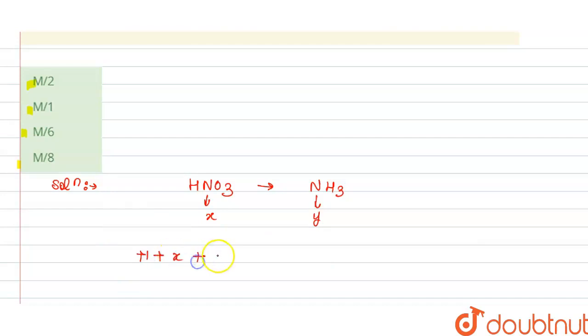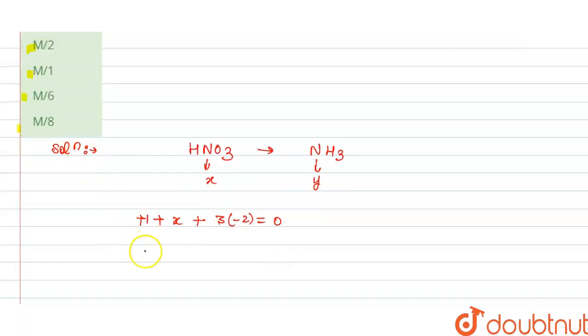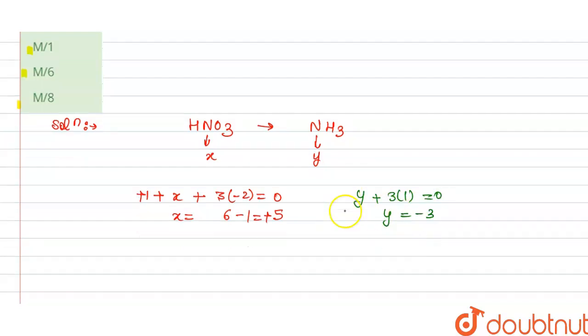So from this we get x equals to six minus one, that is five. So this is plus five here. And in this we have the y plus three multiplied by one equals to zero, so y is minus three. So this is plus five here and this is minus three.